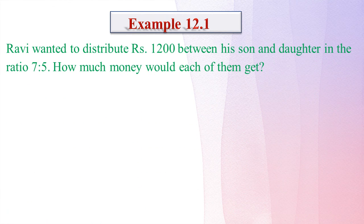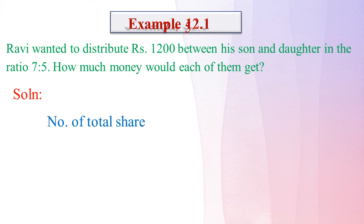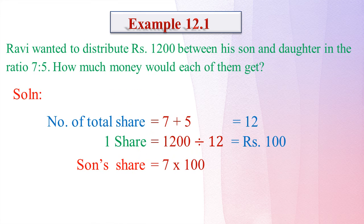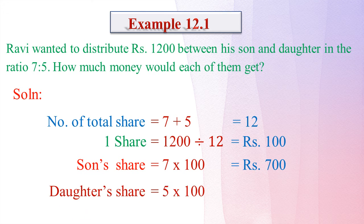Example 12.1: Ravi wanted to distribute Rs. 1200 between his son and daughter in the ratio 7 is to 5. Total number of shares equals 7 plus 5 equals 12. One share equals 1200 divided by 12 equals Rs. 100. Son's share equals 7 multiplied by 100 equals Rs. 700. Daughter's share equals 5 multiplied by 100 equals Rs. 500.